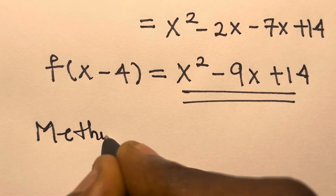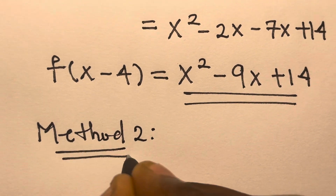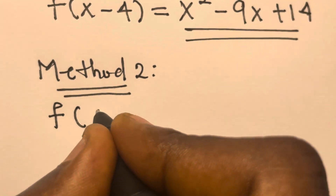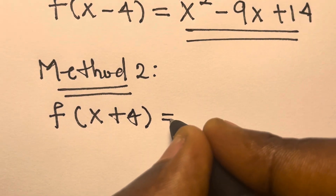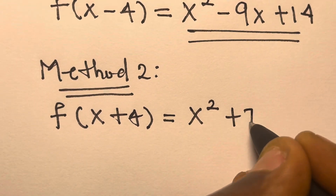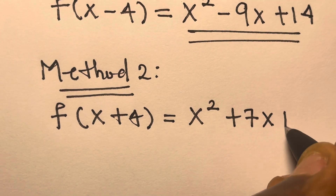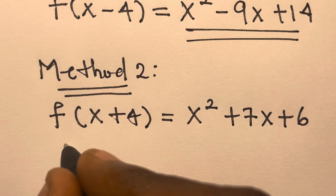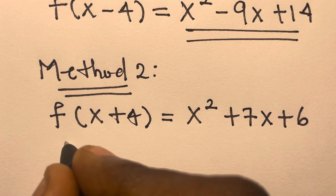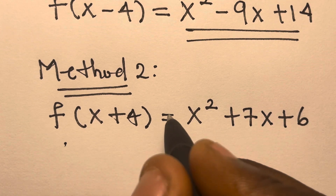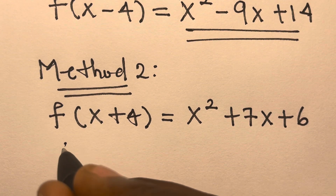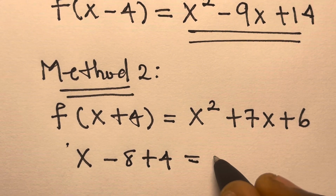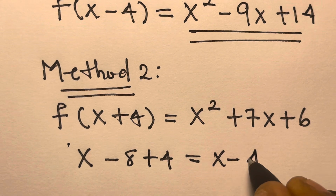Let's try another method to verify. We have f(x+4) equals x squared plus 7x plus 6, and we want to solve for f(x-4). Here we substitute x with x minus 8, because x minus 8 plus 4 equals x minus 4, which is what we want.